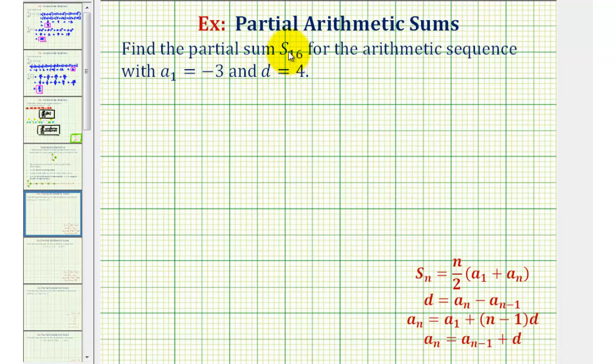We want to find the partial sum S sub 16, which means we want the sum of the first 16 terms for the arithmetic sequence with A sub one, the first term, equal to negative three, and D, the common difference, is equal to four.